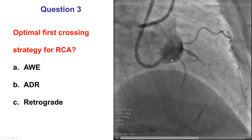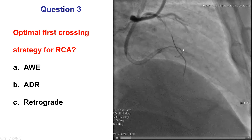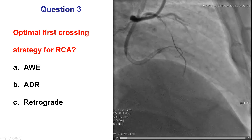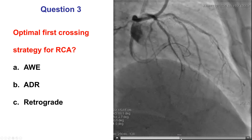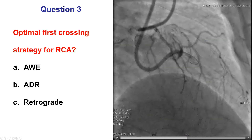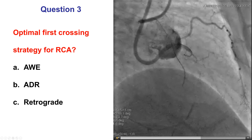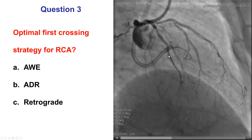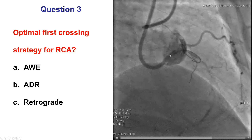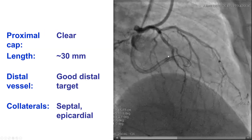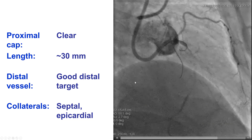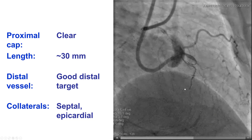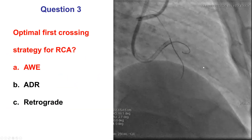Here is a lateral view of the right coronary artery. We have a CTO with a well-defined proximal cap. There are small branches — an acute marginal branch — but there is a well-defined proximal cap. We have an Amplatz 1-type catheter and a well-defined proximal cap with a length of 30 millimeters. The distal vessel appears to be in good quality, and there were septal and epicardial collaterals, but we decided to first do an antegrade crossing attempt.